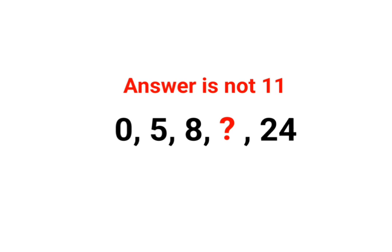If you look at this, 0 is on the first position, 5 is on the second position, and 8 is on the third position. This one should be on the fourth position, and 24 should have been on the fifth position. Now if you look very closely, we can say 1 squared minus 1, or 1 minus 1, gets just 0.